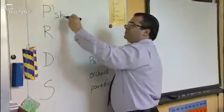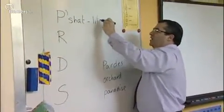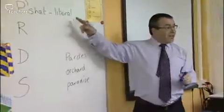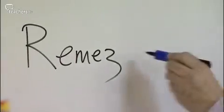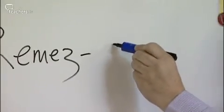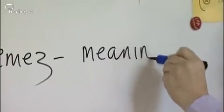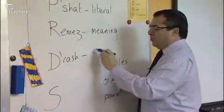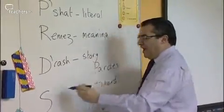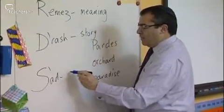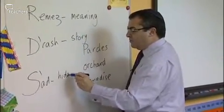The four dimensions of Pardes are: Peshat — literal, what does it say; Remez — interpretation, what does it mean; Drash — a Hebrew word for story; and Sod — the hidden meaning. The story is all about narrative, people, characters, and text. It's bringing to life something which could be quite dry and didactic.